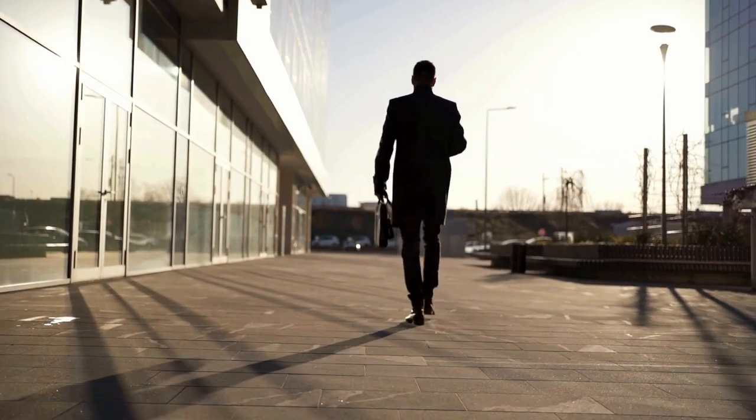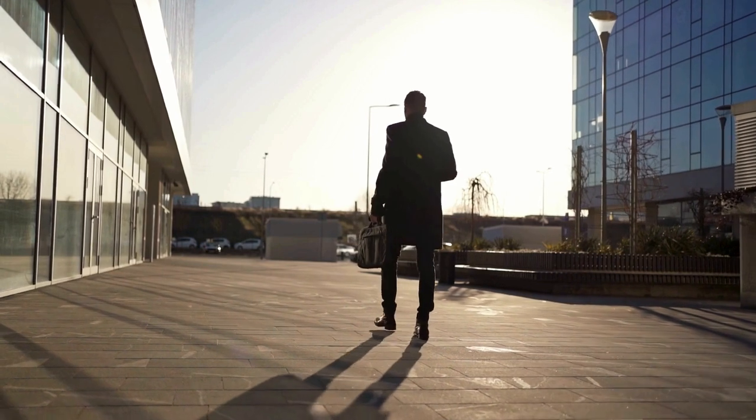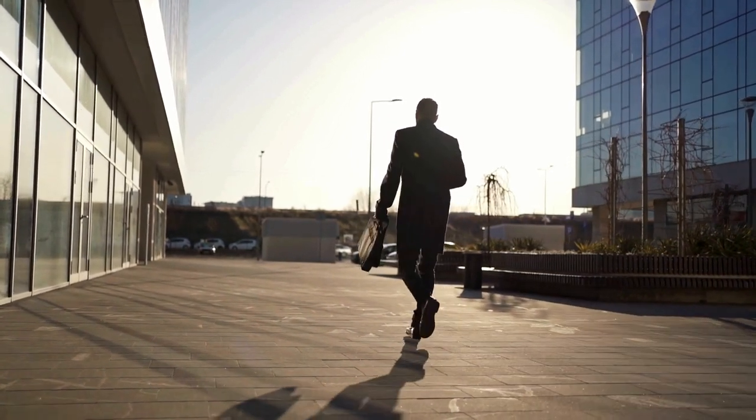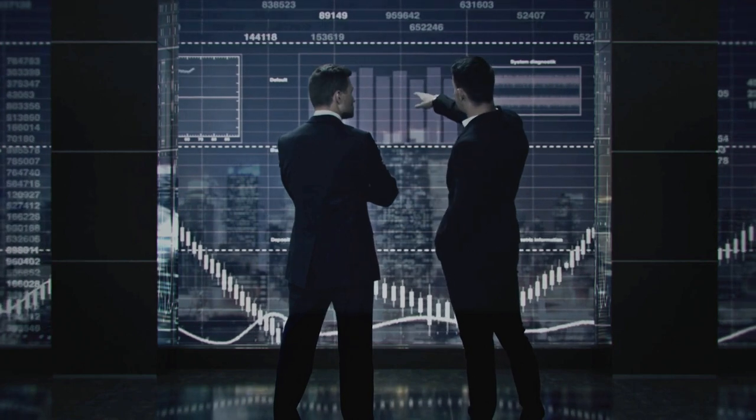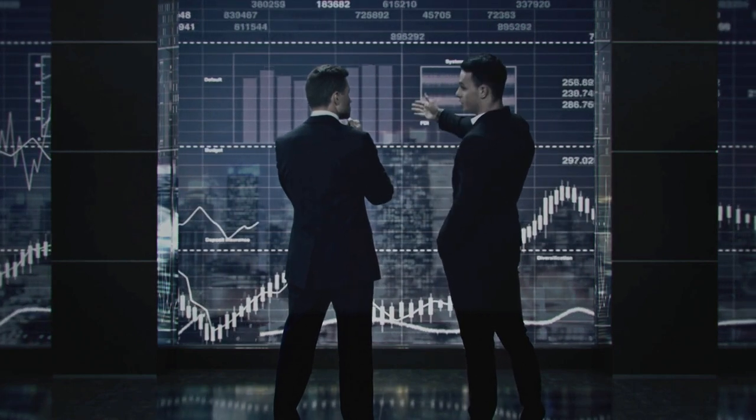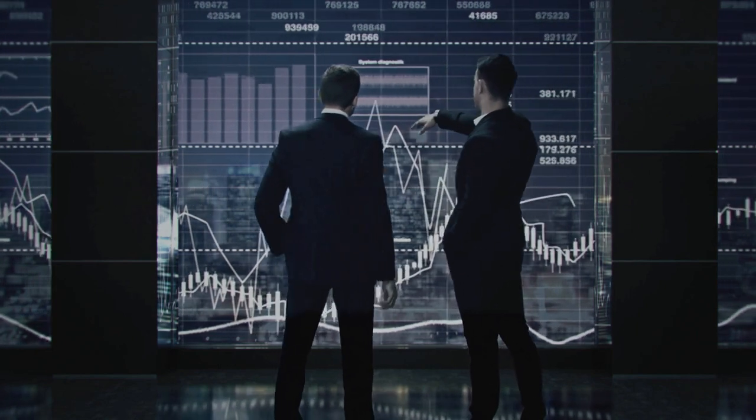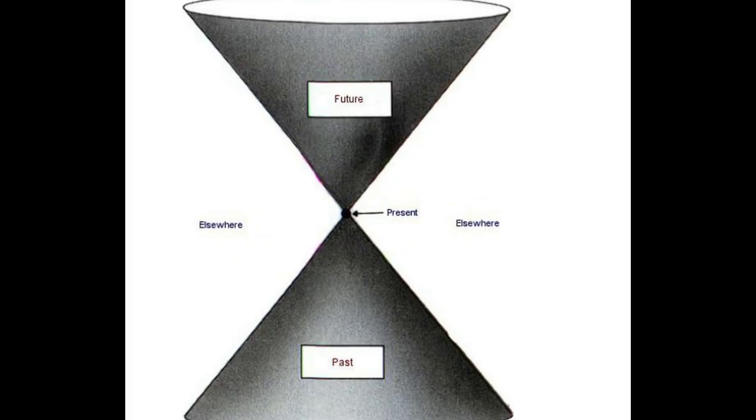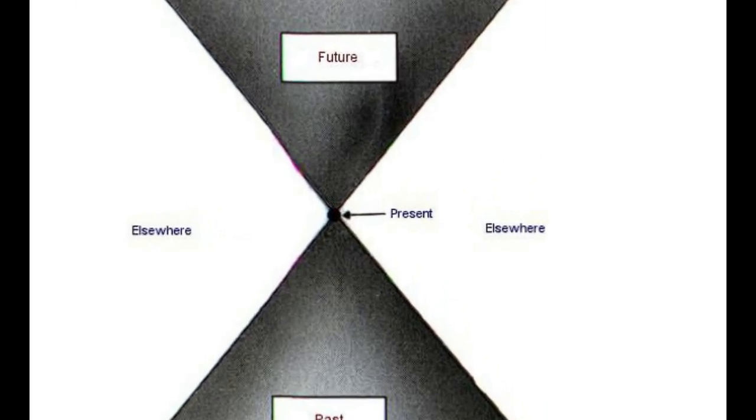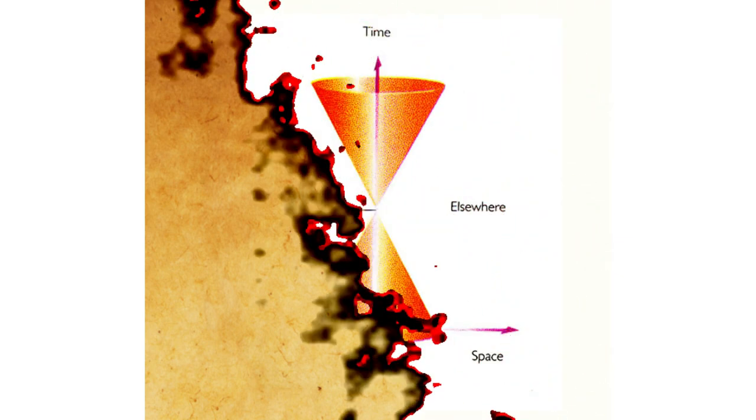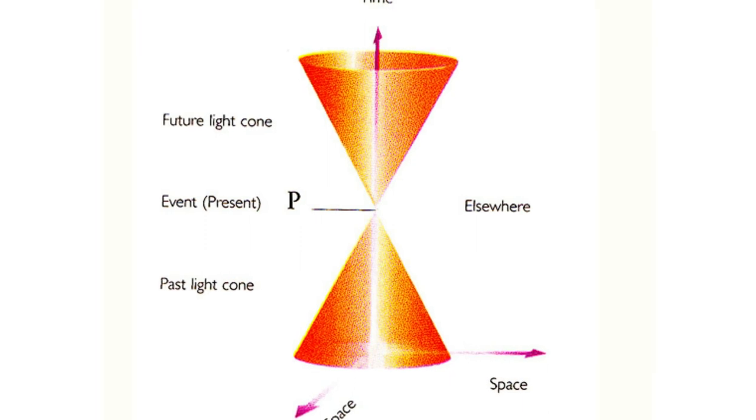In simple terms, events from your past can influence what's happening now and the past light cone helps us visualize which past events could have affected your present. Just as events in the future can be influenced by your actions now, your past actions have shaped your present and these influences are represented within the past light cone. Events that neither lie in the future or in the past of event p are said to be in the elsewhere of p. These events are beyond the reach of p's influence and they cannot affect or be affected by what happens at p.